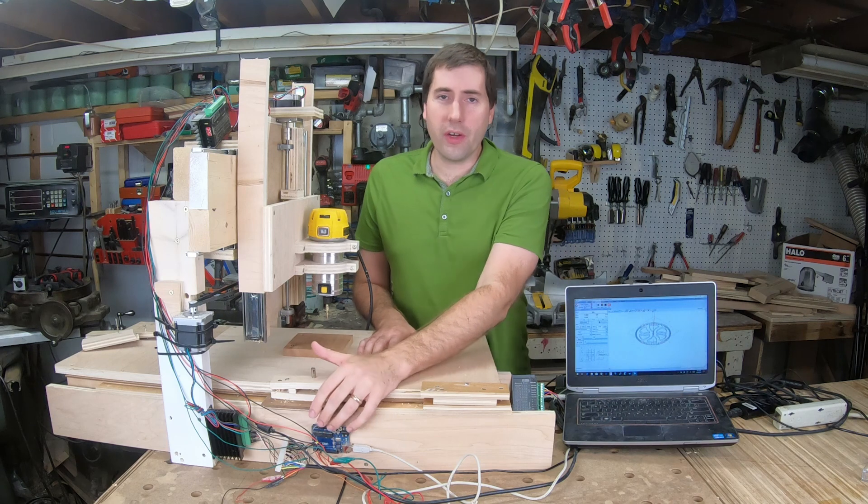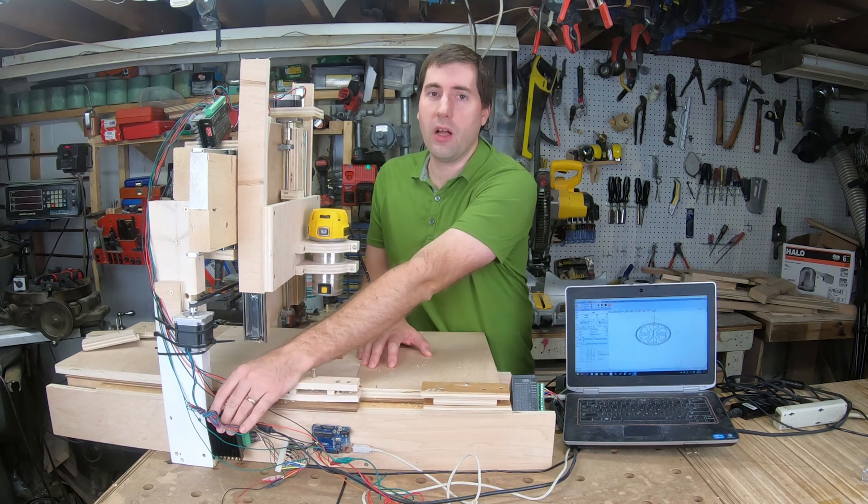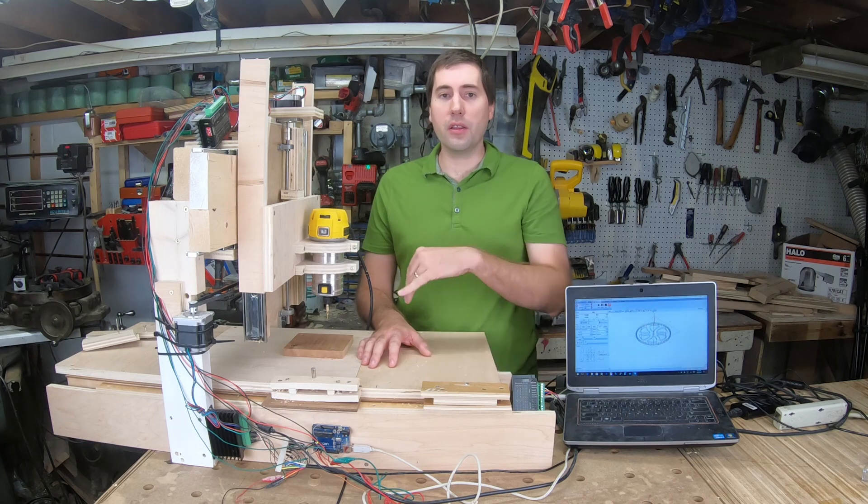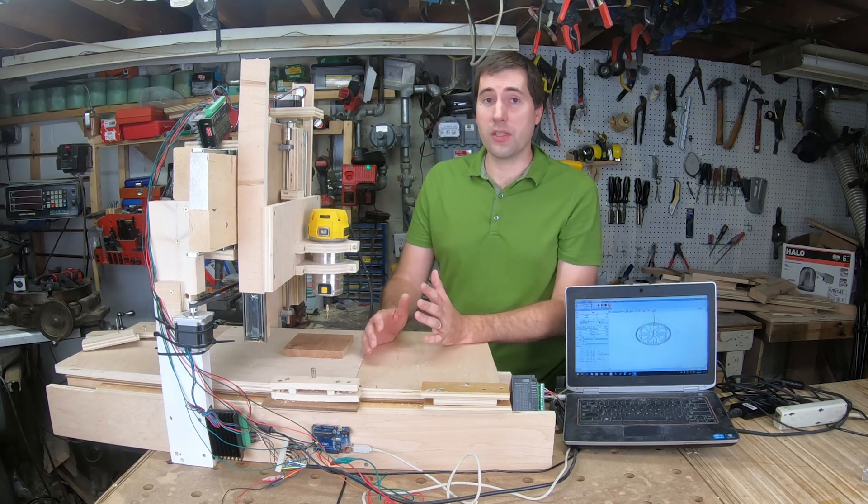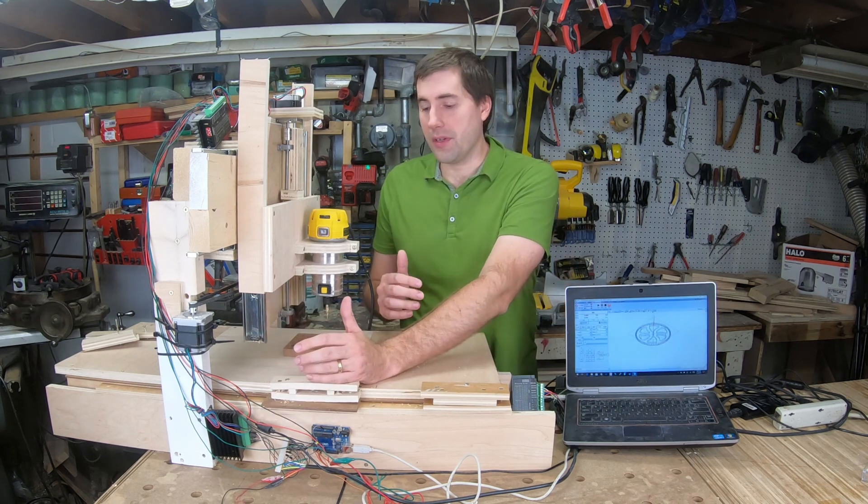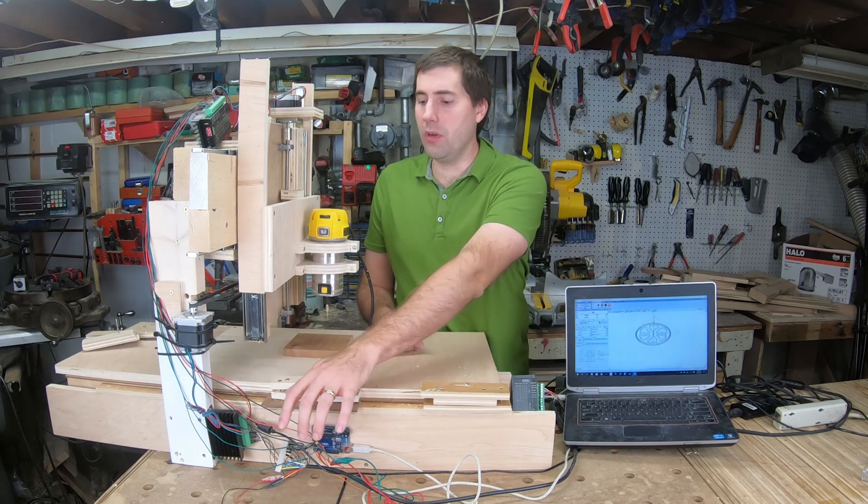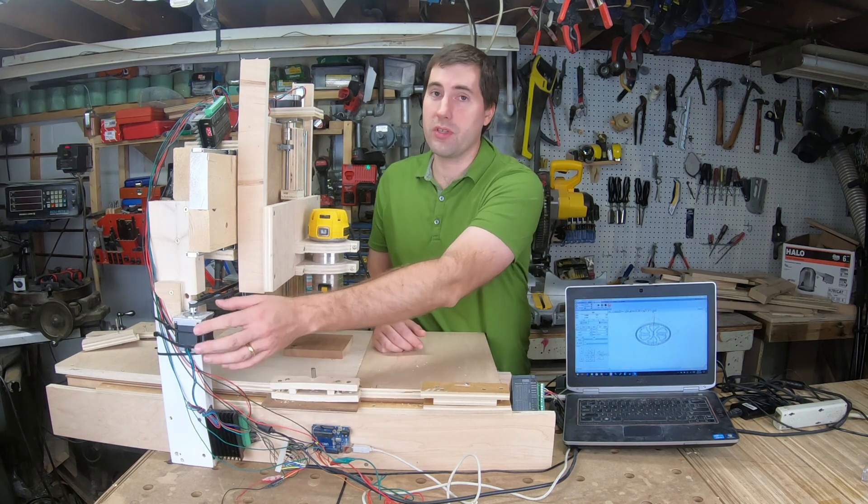So this Uno is very inexpensive. These motor controllers each are fairly inexpensive as well. I'll put a full bill of materials later on in the video here so you can see the breakdown of all the costs on them. But you still need three of them, so it kind of adds up. So each one of these takes the pulses that come out of the Uno and amplifies them to control the steppers.